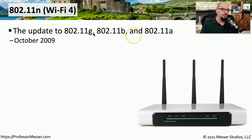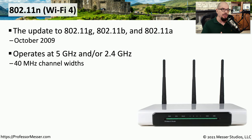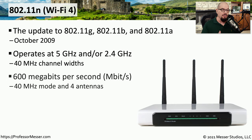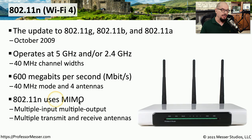In October of 2009, the IEEE introduced a new standard called 802.11n, now retroactively referred to as Wi-Fi 4. This N version is an update to 802.11g, 802.11b, and 802.11a. Unlike the previous standards, you're able to use 802.11n in either 2.4 gigahertz or 5 gigahertz frequencies, and you can use larger channel widths to transfer more data at one time. Maximum throughput reaches around 600 megabits per second using 40 megahertz mode with four separate antennas. 802.11n also introduces MIMO — Multiple Input, Multiple Output — which increases the number of transmit and receive antennas to send more information across the wireless network simultaneously.